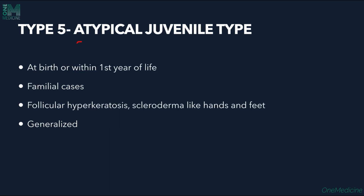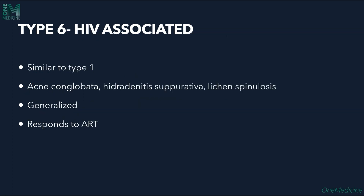Type 5, the atypical juvenile type, presents at birth or within the first year of life. Familial cases are noted with follicular hyperkeratosis and scleroderma-like changes — thickening and fibrosis of the hands and feet — and it is a generalized disease. Type 6, the HIV-associated type, is similar to Type 1 but with HIV association; other features include acne conglobata, hidradenitis suppurativa, and lichen spinulosus, and the patient must be treated with antiretroviral therapy (ART), which resolves the lesions.